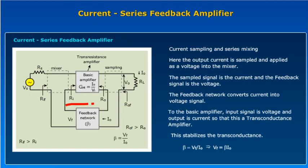Next is the current series feedback amplifier. Here the sampling is current sampling and mixing is series mixing. The output current is sampled and applied as a voltage into the mixer. The sample signal is a current and the feedback signal is a voltage. The feedback network converts current into the voltage signal. The basic amplifier input signal is a voltage and the output is a current, so the basic amplifier is a transconductance amplifier. Here beta is equal to VF by I0.